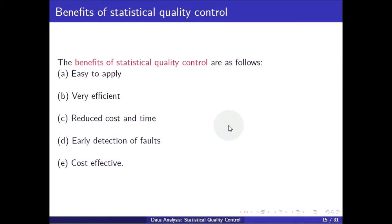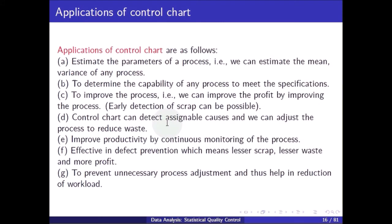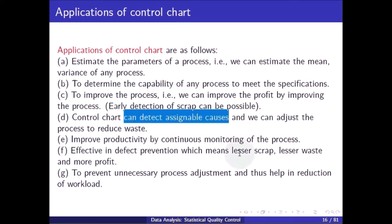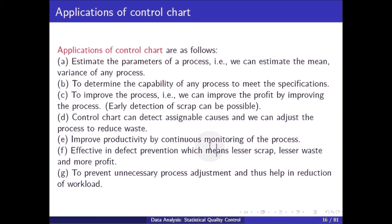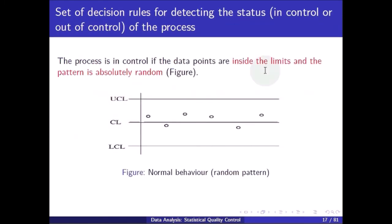Applications of control charts include: estimating the parameters of a process such as mean and variation; determining the capability of a process to meet specifications; improving the process to increase profit; detecting assignable causes to adjust the process and reduce waste; improving productivity through continuous monitoring; effective defect prevention resulting in lesser scrap, lesser waste, and more profit; preventing unnecessary process adjustments; and providing a set of decision rules for detecting whether the process is in or out of control.